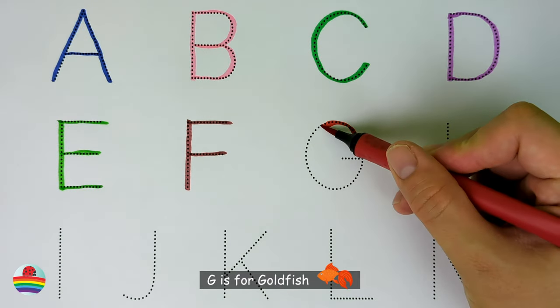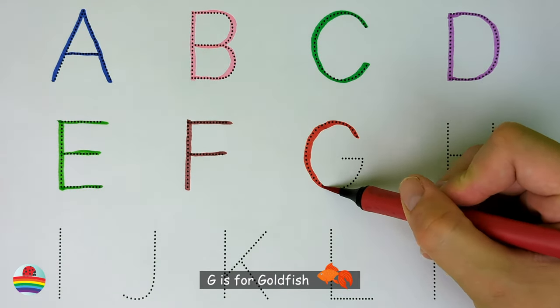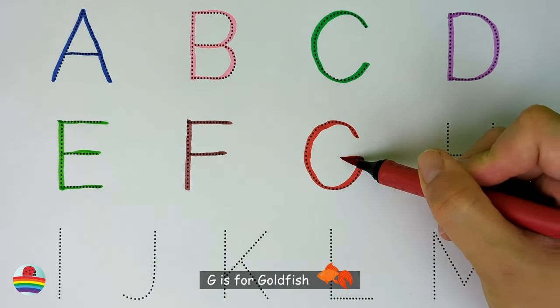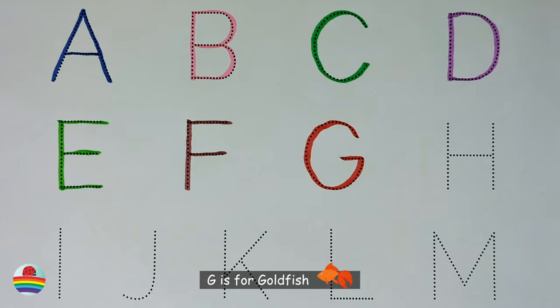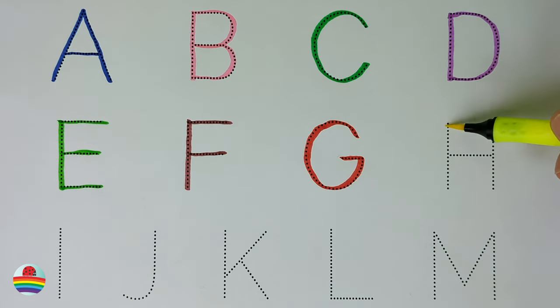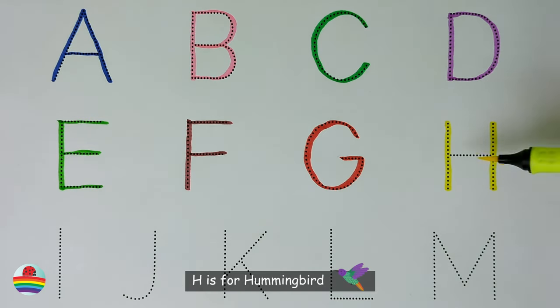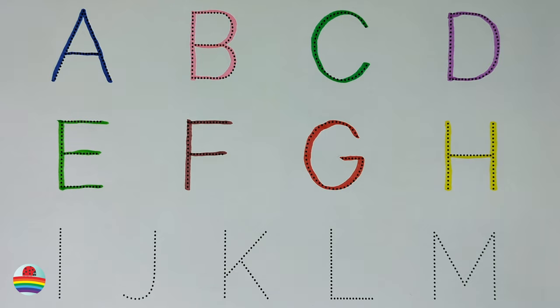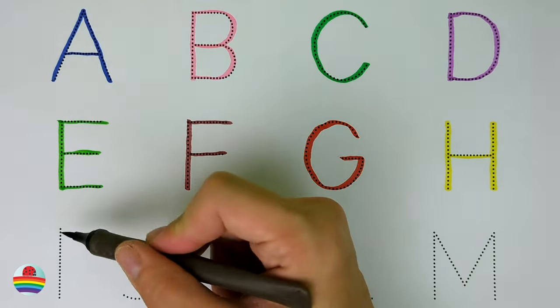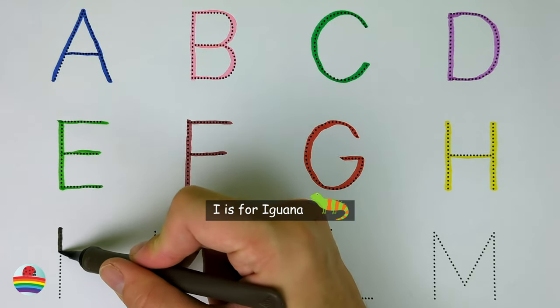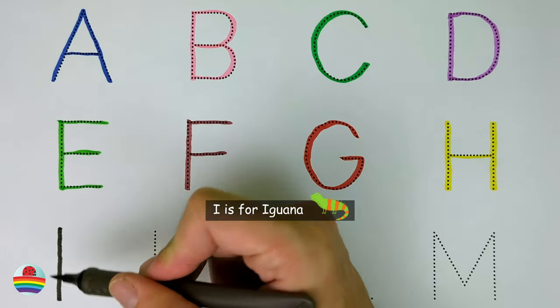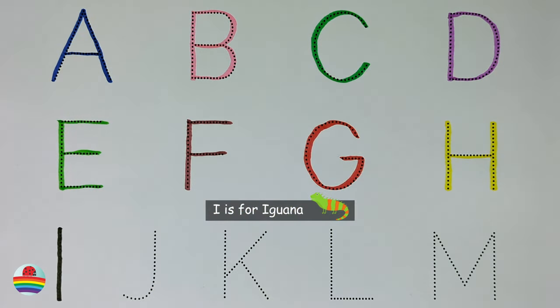G. G is for Goldfish. G. H. H is for Hummingbird. H. I. I is for Iguana. I.